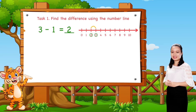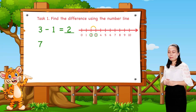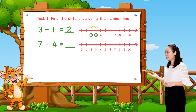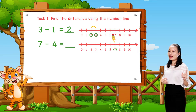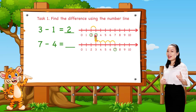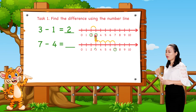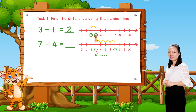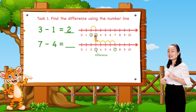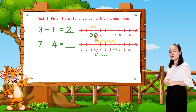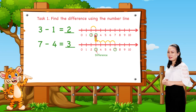Next, 7 minus 4. We start from number 7. Then jump 4 numbers to the left. Then see the number where we stop. This number is the difference. Here we stop at number 3. So, 7 minus 4 equals 3.